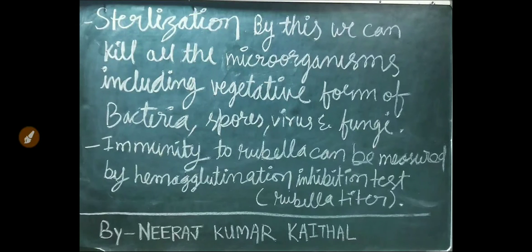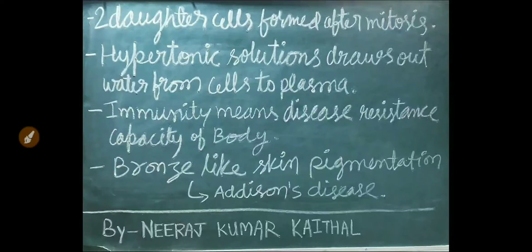Immunity to rubella can be measured by the hemagglutination inhibition test, also known as the rubella titer. Two daughter cells are formed after mitosis. A hypertonic solution draws water out from cells into plasma. Immunity means the disease resistance capacity of the body. Bronze-like skin pigmentation is seen in Addison's disease.